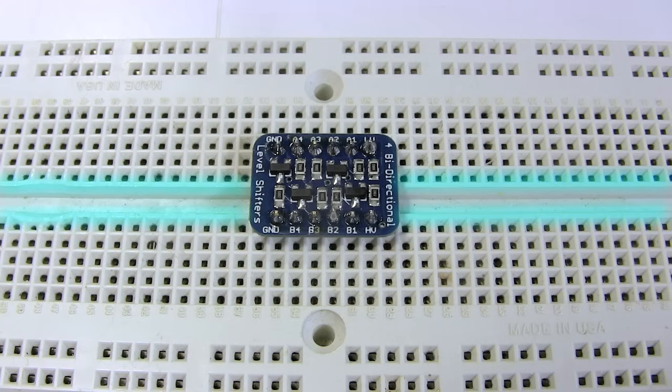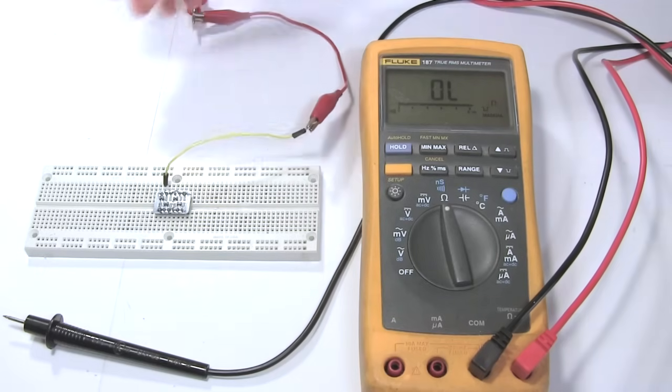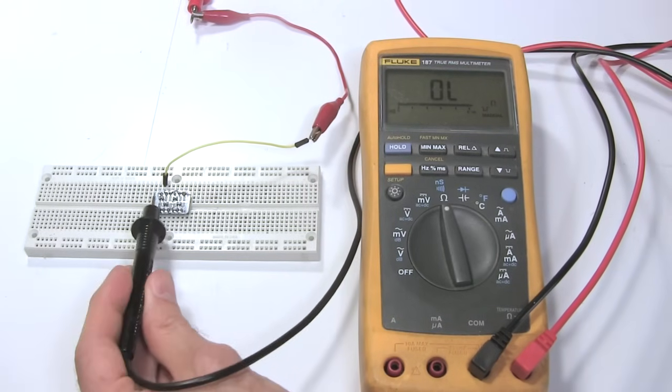Note that the board is spanning the gap on the breadboard, with one row of pins on one side, and the other row of pins on the other side. That way these pins are connected to these holes, and these pins are connected to these holes. Then I put the wire in one hole, and test the pin that's connected to that hole.